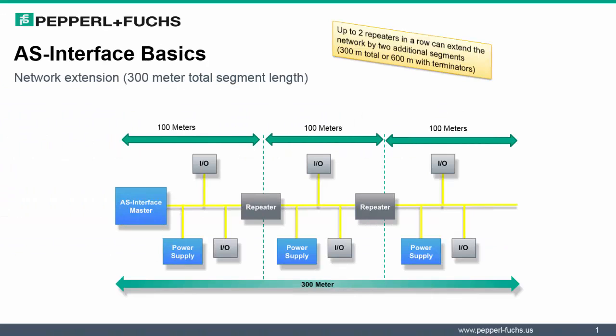Let's consider networks longer than 100 meters in length. Network extension is possible with AS Interface by the use of repeaters and terminators. Up to two repeaters in a row can extend the network by two additional segments. In the diagram here, we have our ASI master at the leftmost position. We have the ability to extend the network up to 300 meters by the use of two repeaters. But again, our restriction is that only two repeaters can be added to the right of our master. Thus, what we accomplish is now our network increases from 100 meters to 300 meters.